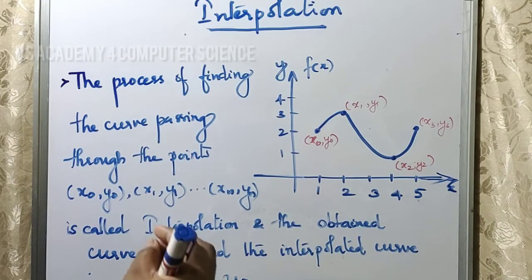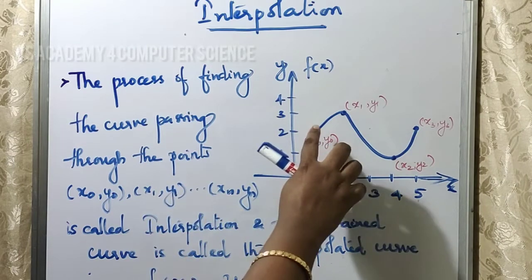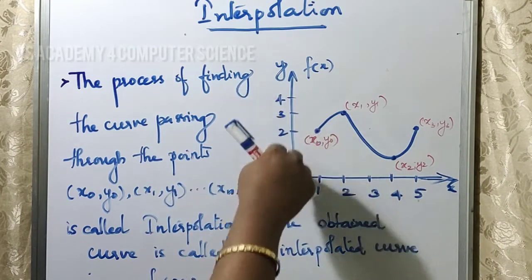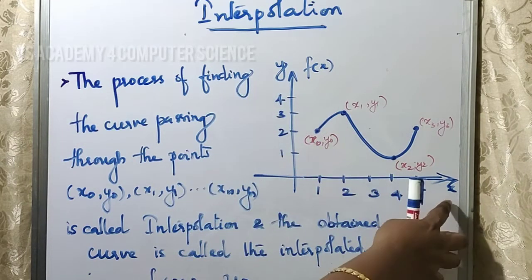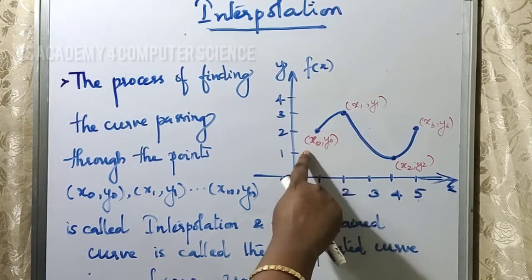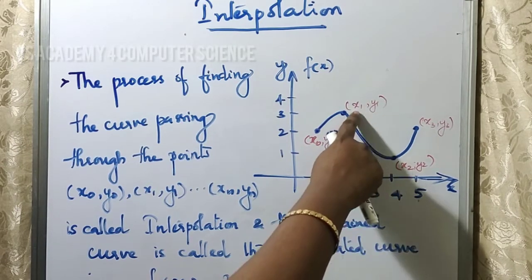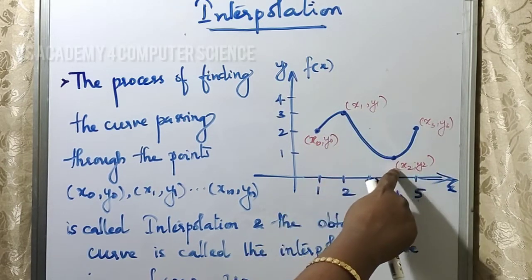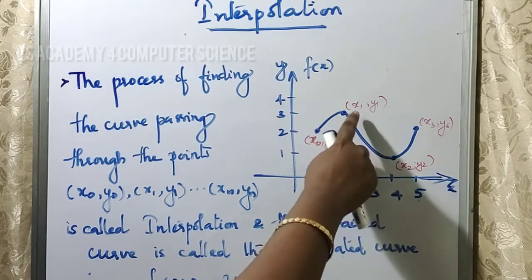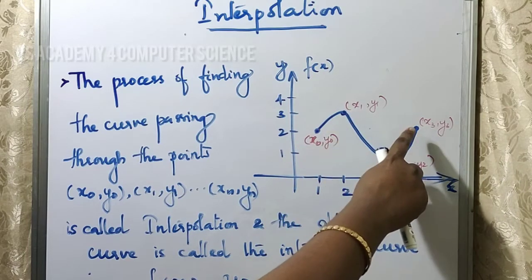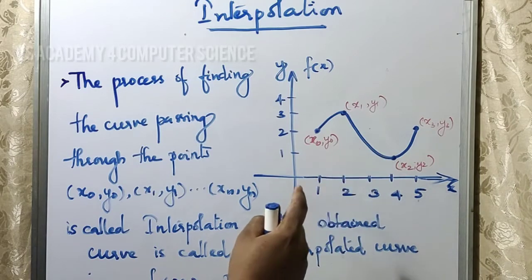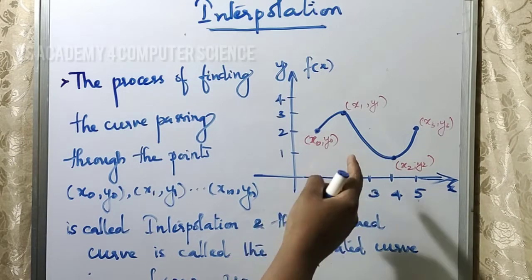Now, I will explain this graph. In this particular graph, the starting point is (x0, y0), then (x1, y1), (x2, y2), (x3, y3). If we have a smooth curve, we have to determine the intermediate points.